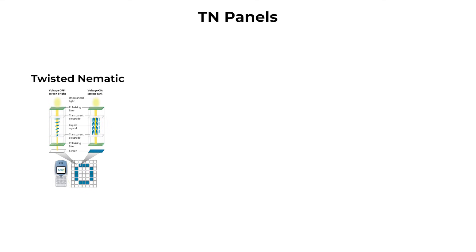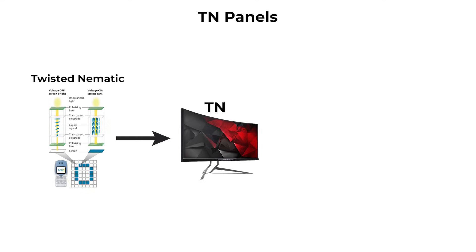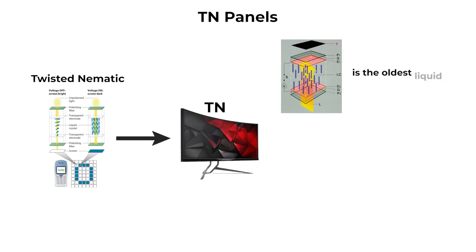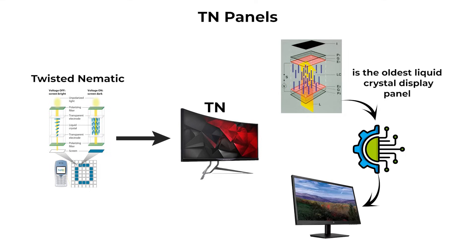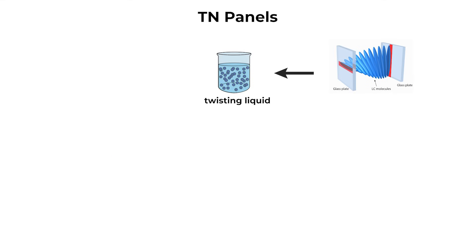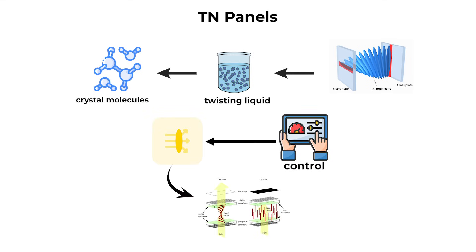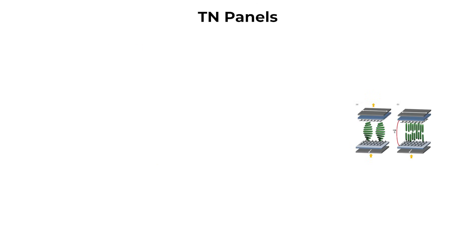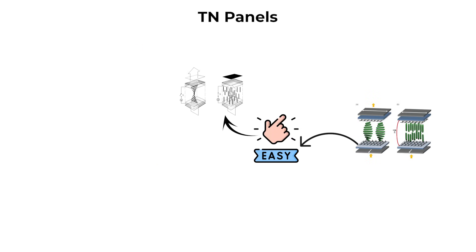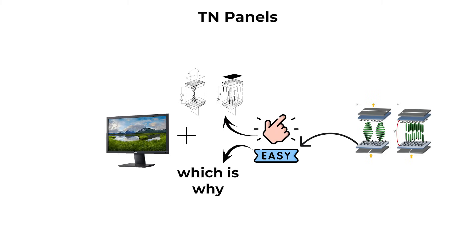TN panels. Twisted nematic, or TN, is the oldest liquid crystal display panel technology still used in monitors today. It works by twisting liquid crystal molecules to control how light passes through the panel. This twisting mechanism makes it simple and inexpensive to manufacture, which is why TN monitors are usually the cheapest option available.